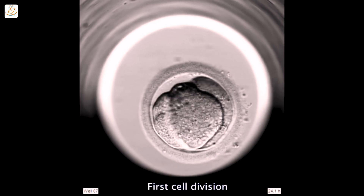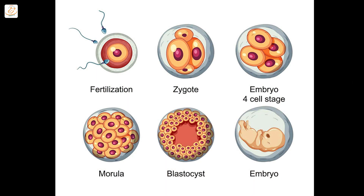When we retrieve gametes and incubate them in the lab, day zero is the fertilization day, where sperm provides male gametes and male nuclei, and female gametes or female DNA come together to form one embryo. Then on day one it goes to a two-cell stage, then cells divide — 2 to 4, 4 to 8, 8 to morula — and on day five we get the blast stage.